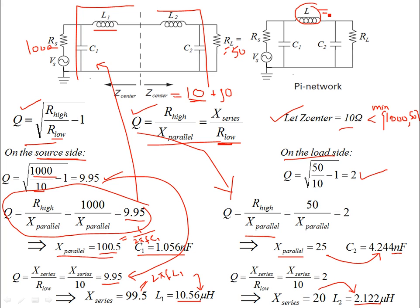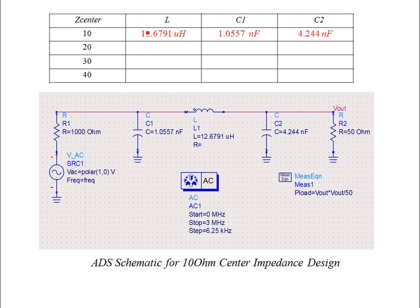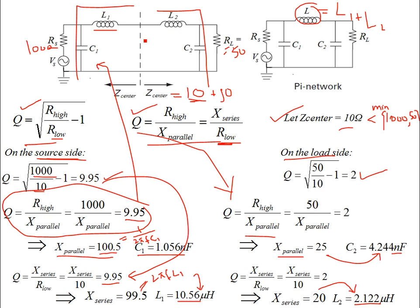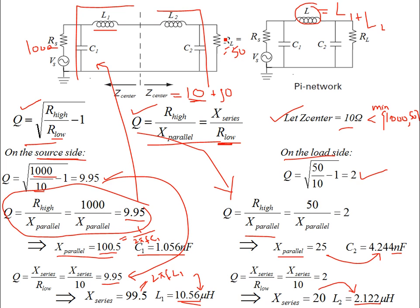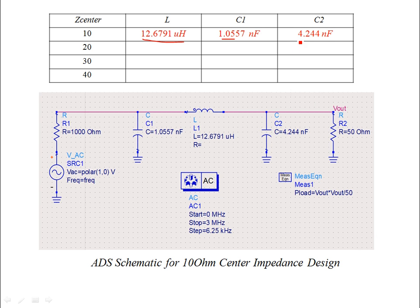The total series inductance is L = L1 + L2 = 10.56 + 2.12 = 12.68 μH. With C1 = 1.056 nF and C2 = 4.244 nF, the circuit is set up in ADS for linear AC simulation. V_out squared over 50 gives the power at the load, swept from 0 to 3 MHz around the design frequency of 1.5 MHz, with an appropriate step size to produce a smooth curve.